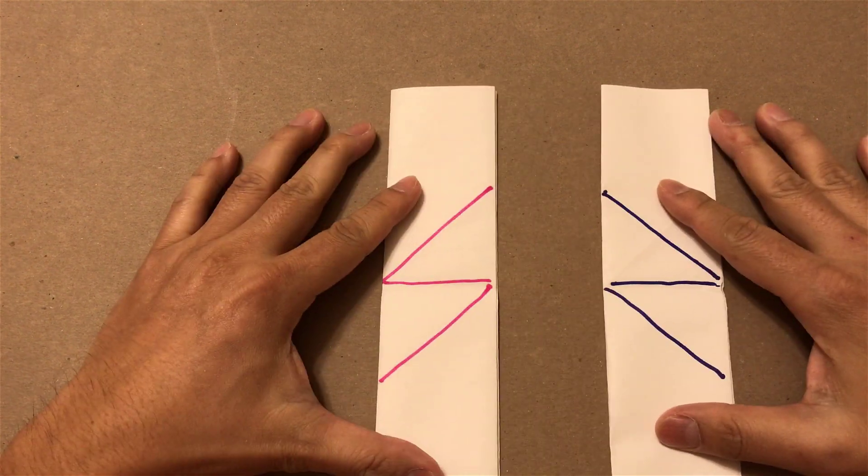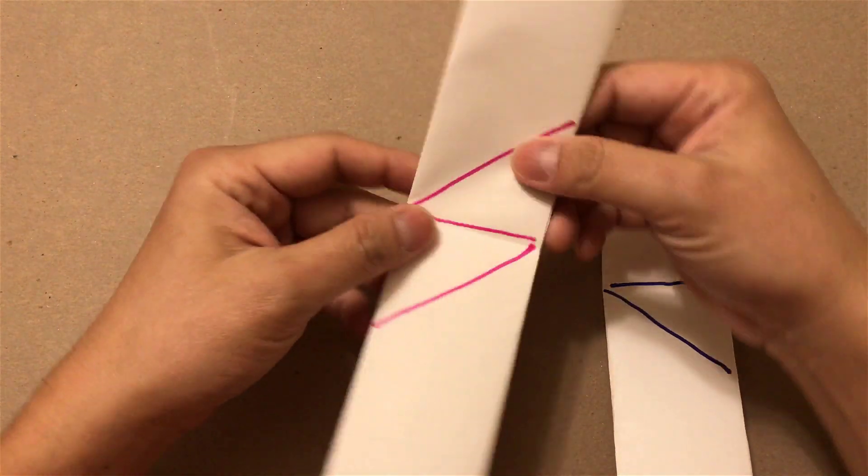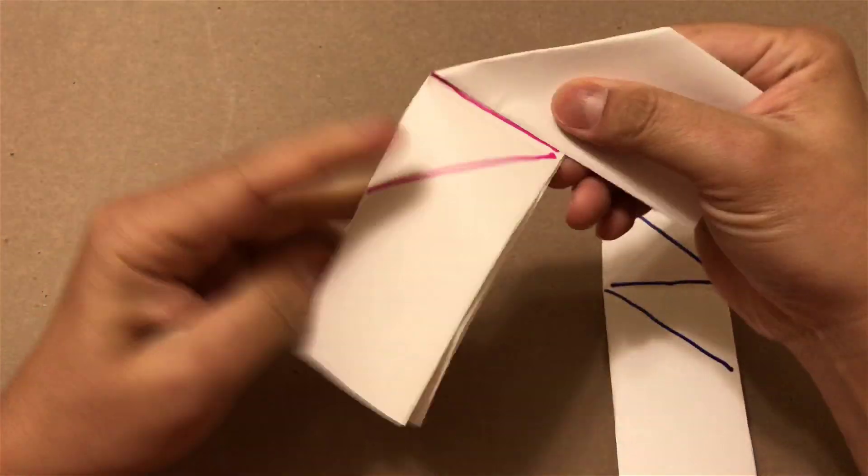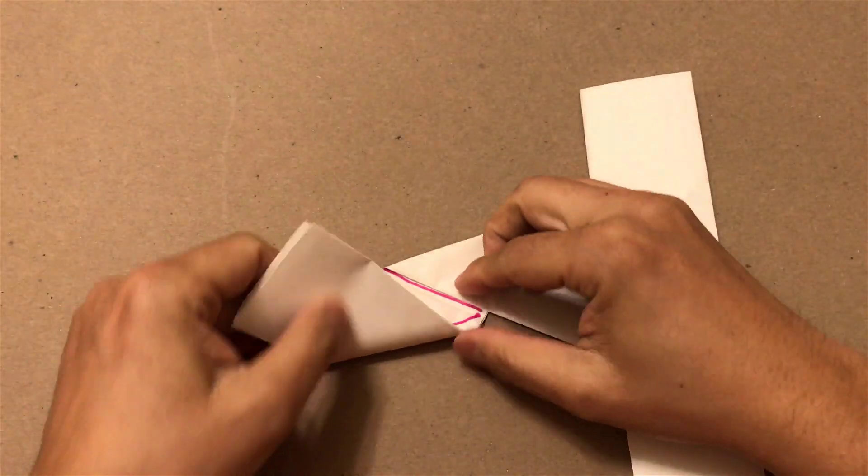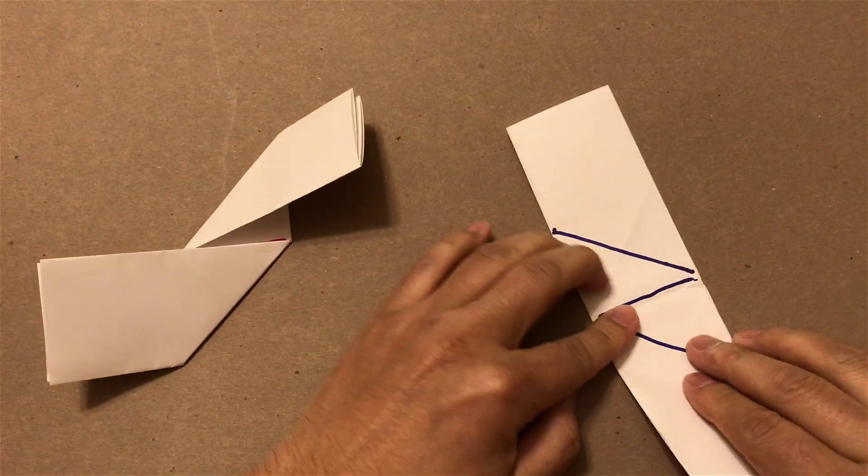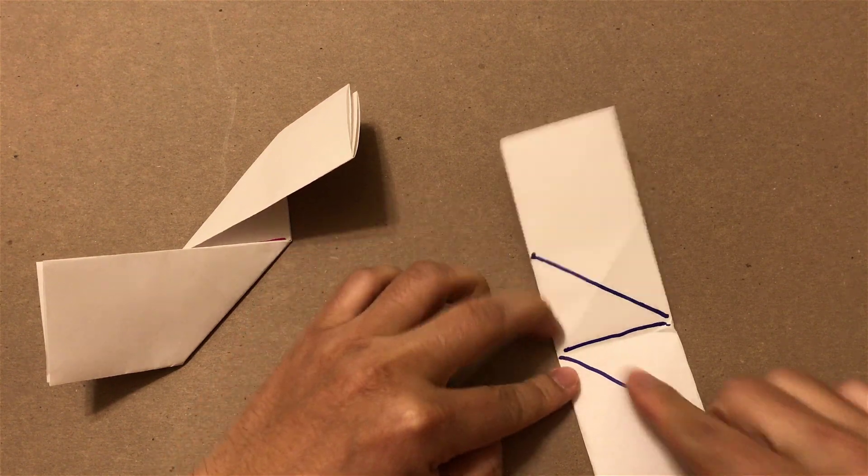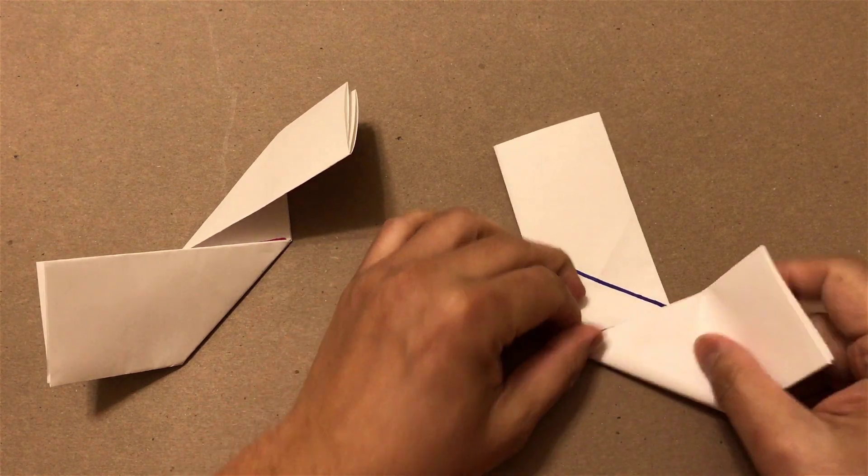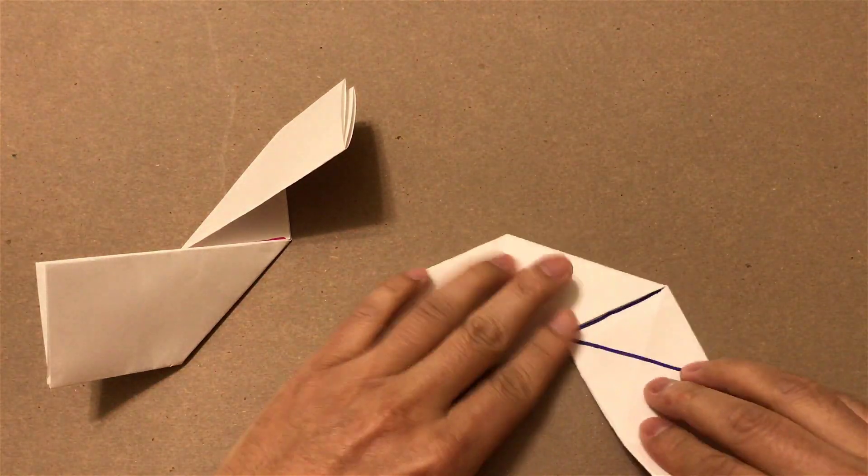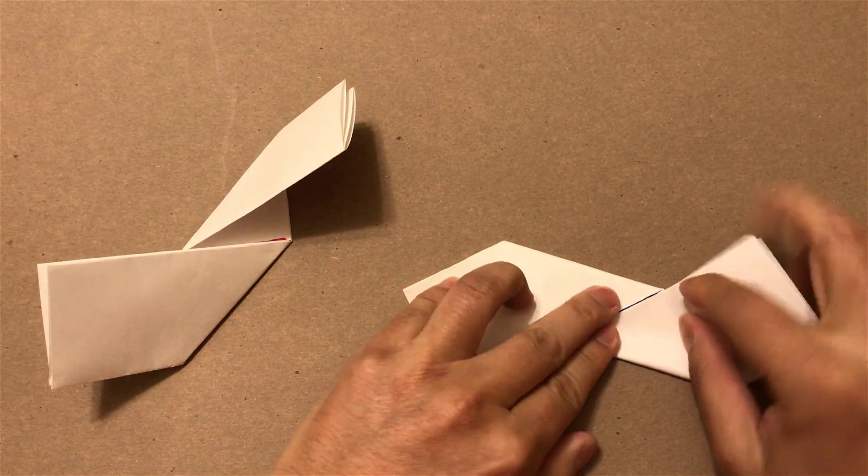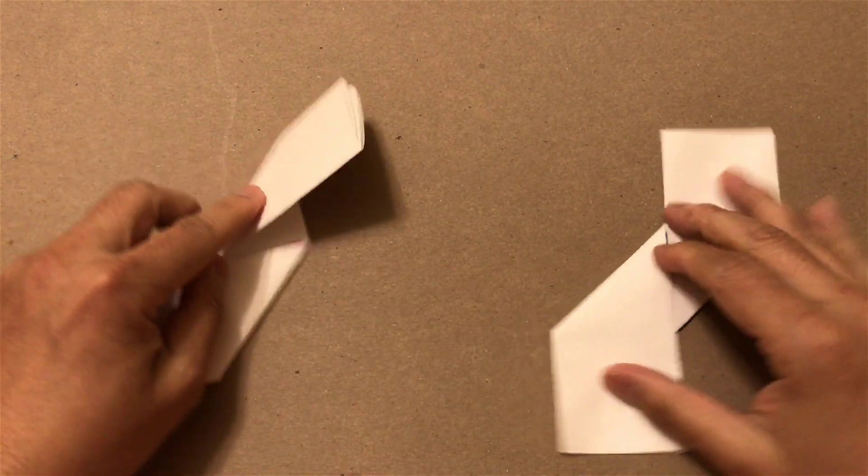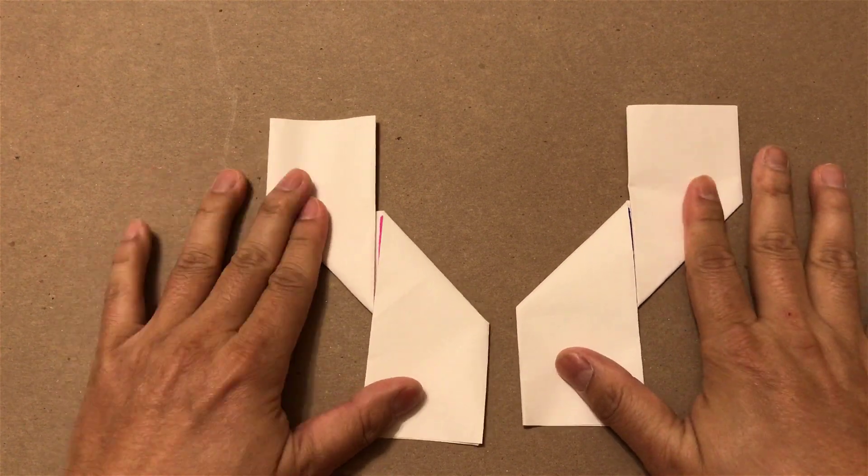So I'm going to fold it here. I'm going to fold it around. Now we have two shapes like that.